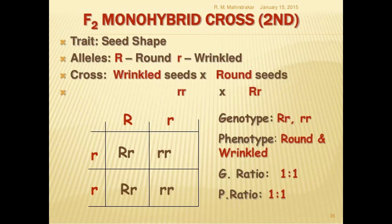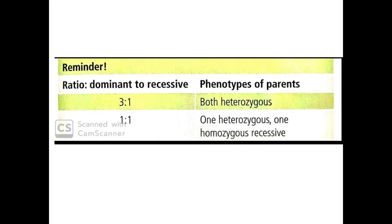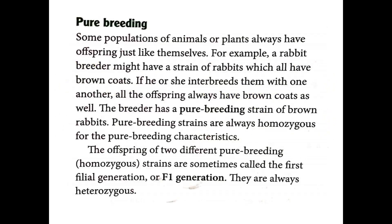Another monohybrid cross example uses wrinkled and round seeds, giving a 1:1 ratio of round to wrinkled in the next generation. As a reminder: a 3:1 ratio indicates a heterozygous cross, while a 1:1 ratio indicates one heterozygous and one homozygous recessive parent. Identical alleles are homozygous, also known as pure breeding.